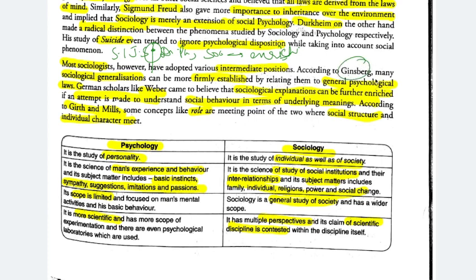Ginsberg said many sociological generalizations can be more firmly established if we relate them to psychological laws — meaning psychology and sociology will enrich each other. Weber also said that sociological explanations can be further enriched if an attempt is made to understand social behavior in terms of underlying meanings.